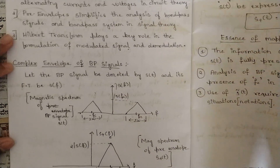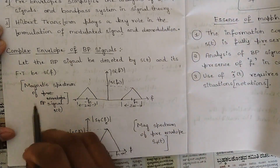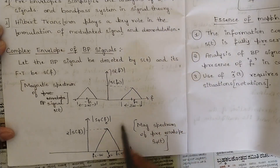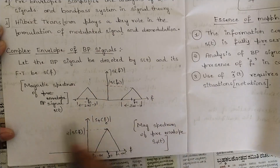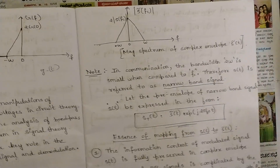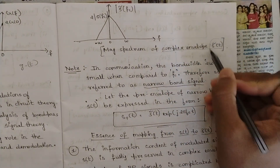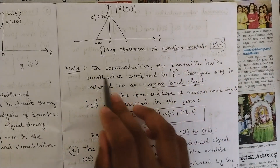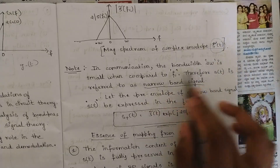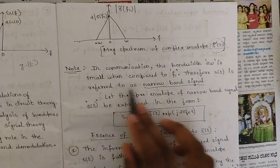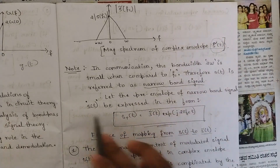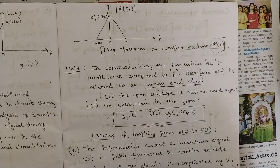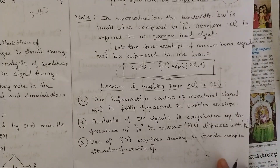There are some notes for the complex envelope of a bandpass signal. This is the magnitude spectrum of bandpass signal s(t) where we have considered bandwidth 2W. This is the magnitude spectrum of pre-envelope s+(t), considering only the positive frequency components. The complex envelope is denoted with a hat symbol. In communication, the bandwidth 2W is small compared to fc, therefore s(t) is referred to as a narrow-band signal. The pre-envelope of the narrow-band signal s(t) is expressed as: s+(t) = ŝ(t)·e^(j·2π·fc·t).